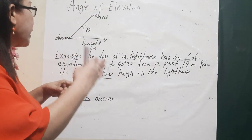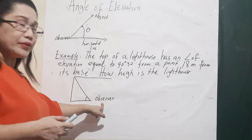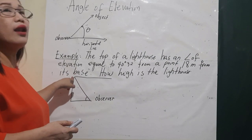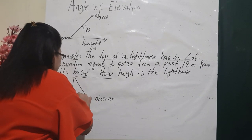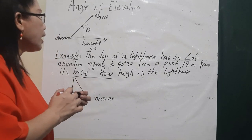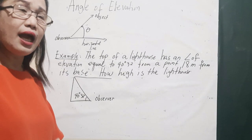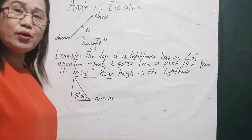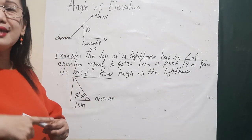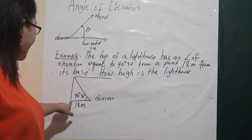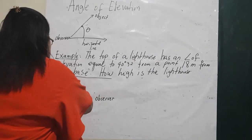Going back to the problem — the angle of elevation is 40 degrees 32 minutes, and the distance from the base is 18 meters. The observer is standing at the base, and we want to find the height of the lighthouse — from the base up to the top. We label this unknown height as our question mark.